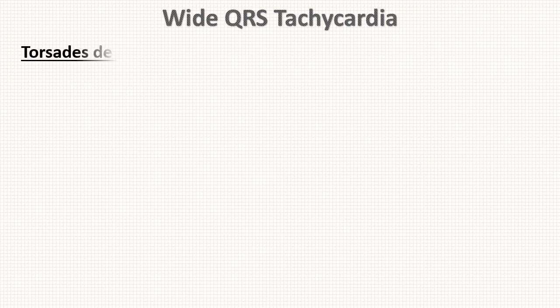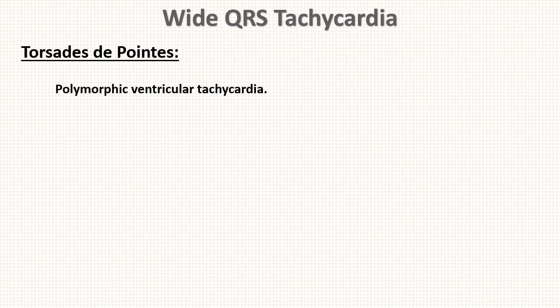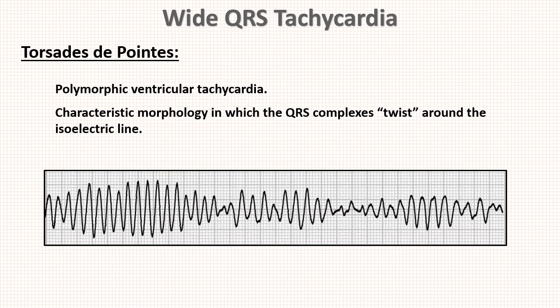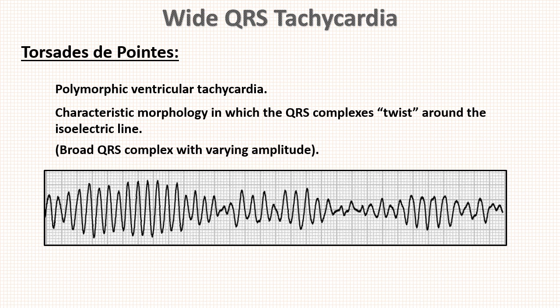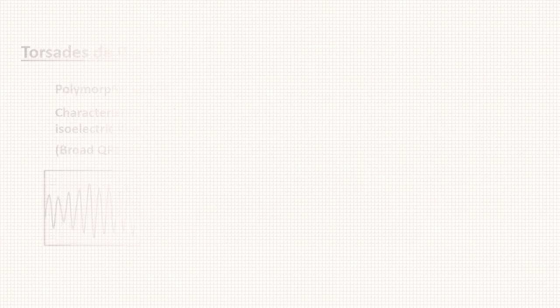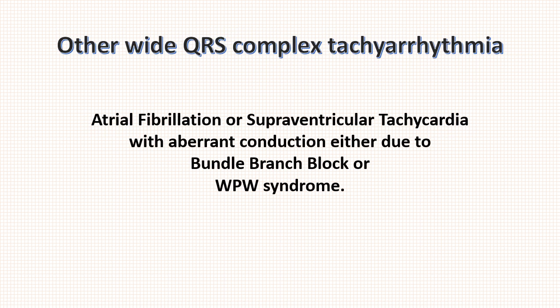Last is torsades de pointes. It is a polymorphic ventricular tachycardia where the classic morphology shows QRS complexes twisted around the isoelectric line, resulting in broad QRS complexes with varying amplitude. Some other causes of wide QRS tachycardia include atrial fibrillation or SVT with aberrant conduction, either due to bundle branch block or WPW syndrome.